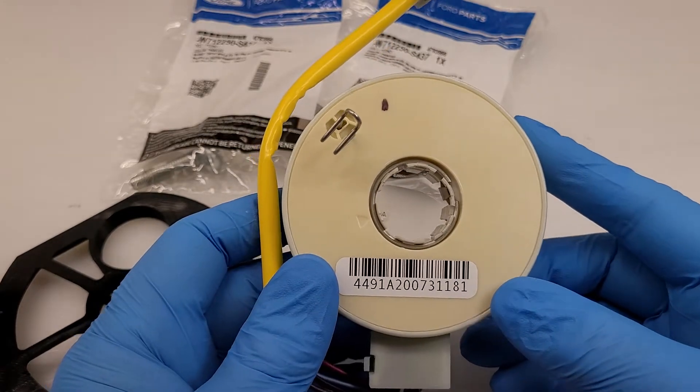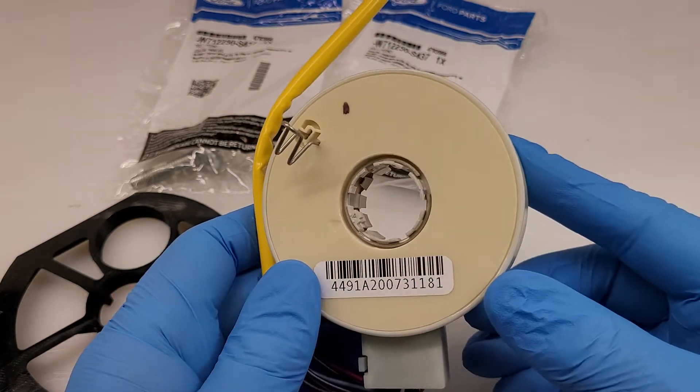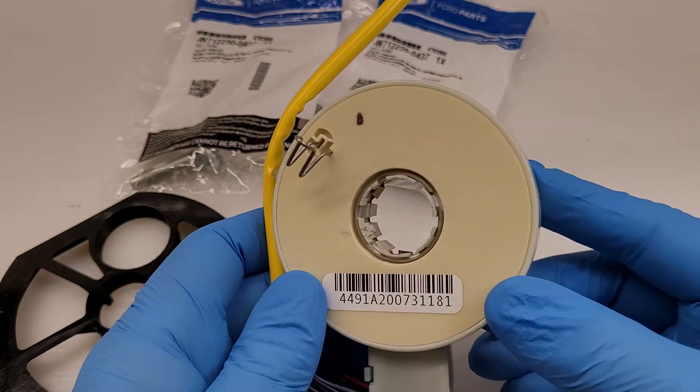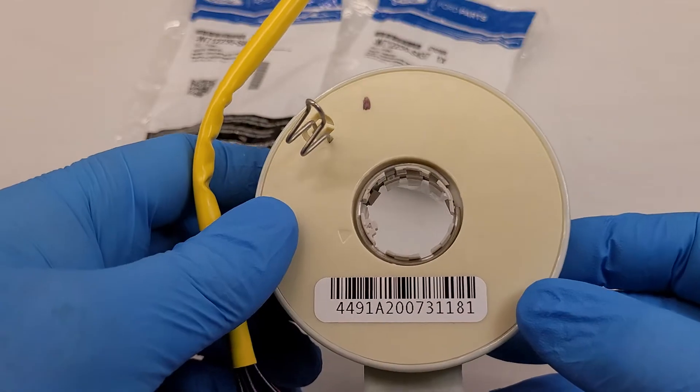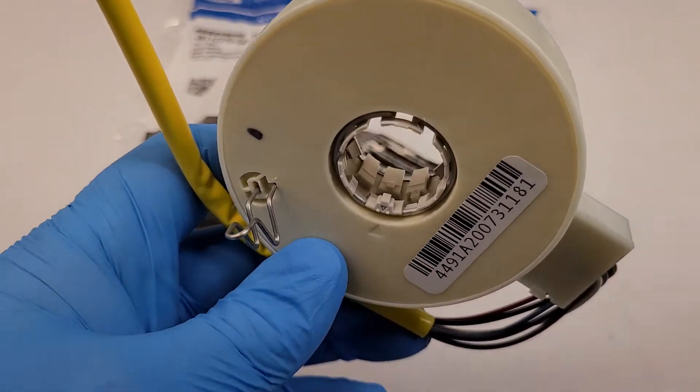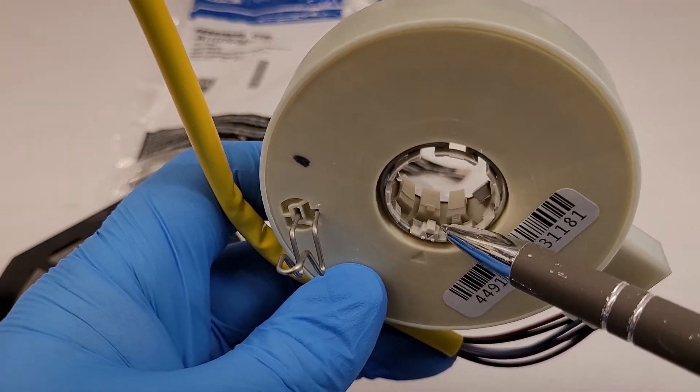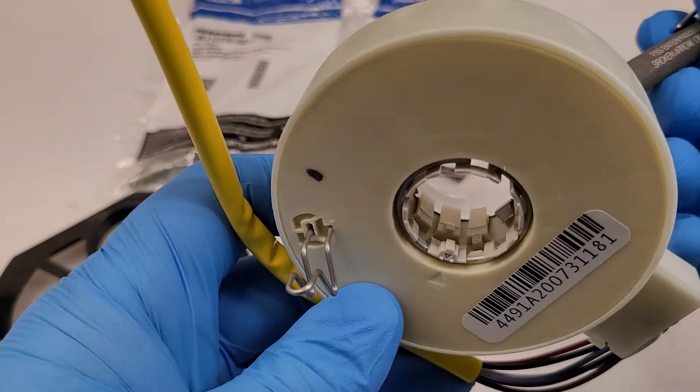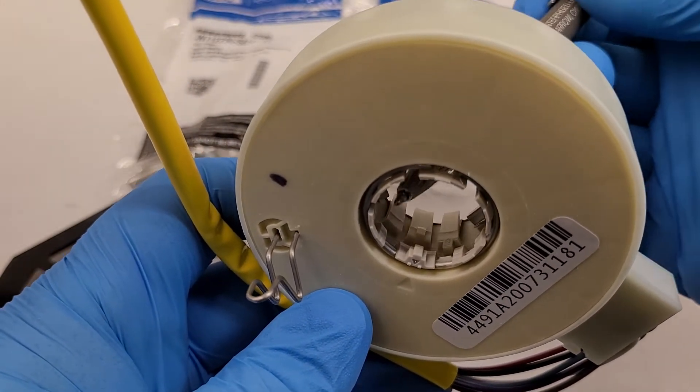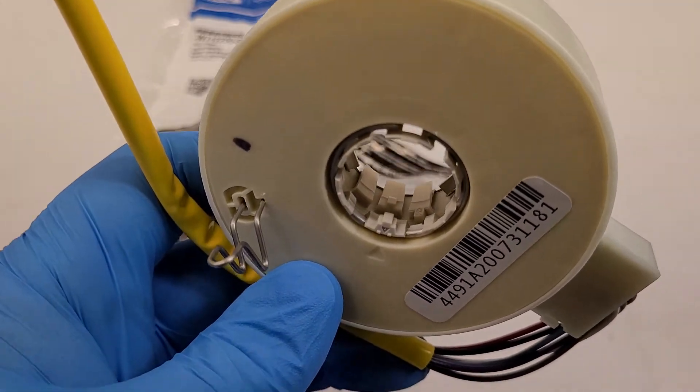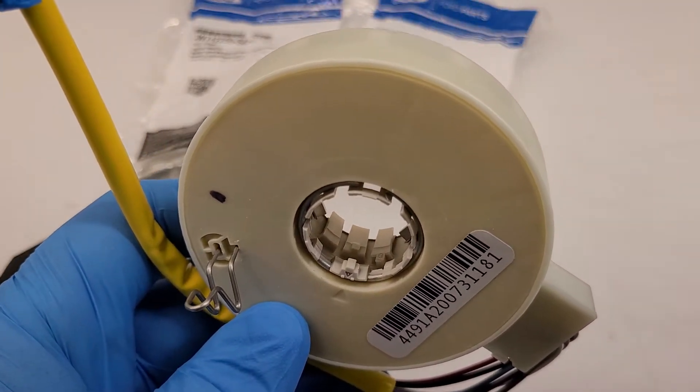These sensors measure torque on the electric motor and steering angle. They do this, there's two discs in here. There's one right here and you can see a little nib there and there's one on the back side here. So there's a disc with a nib and there's a disc with a nib. The top one is angle, the bottom one is your torque.